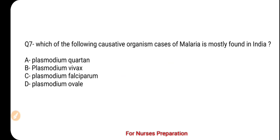Next question: Which of the following causative organisms of malaria is most commonly found in India? Your options are A. Plasmodium Quartan, B. Plasmodium Vivax, C. Plasmodium Falciparum, D. Plasmodium Ovale.